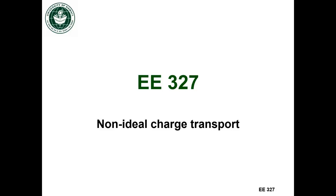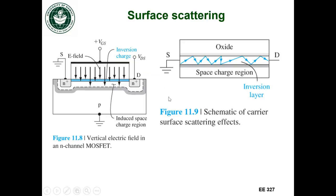I'm going to be talking about non-ideal charge transport. So what happens when charge really moves throughout the MOSFET? The first non-ideal effect that we're talking about is called surface scattering.